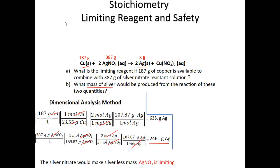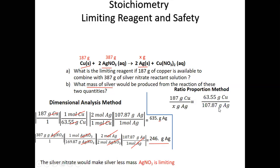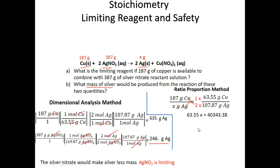Using ratio-proportion for copper: given 187 grams of Cu over x grams of Ag. Right-side fraction uses molar mass for copper (63.55 g) and silver (107.87 g). Mole coefficients: 1 for Cu, 2 for Ag. Cross-multiply: x × 1 × 63.55 = 2 × 187 × 107.87. Divide each side by 63.55 to get 635 grams of silver — matching the dimensional analysis result.